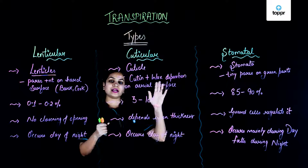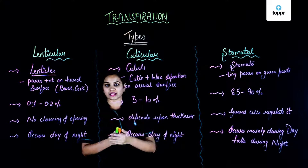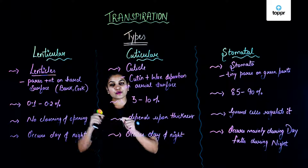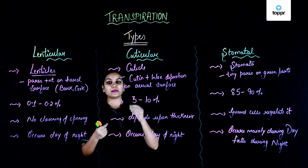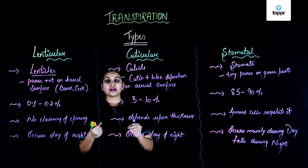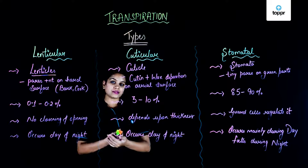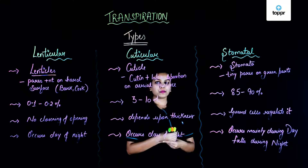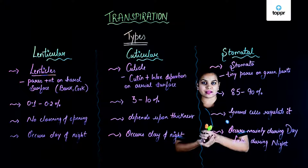When anti-transpirants are applied on the aerial parts of the plant, they decrease the rate of transpiration, which is beneficial. But if used for a longer time or frequently, the plant's growth is also reduced, because lower absorption of water takes place. So frequent use of anti-transpirants leads to lesser growth of the plant.